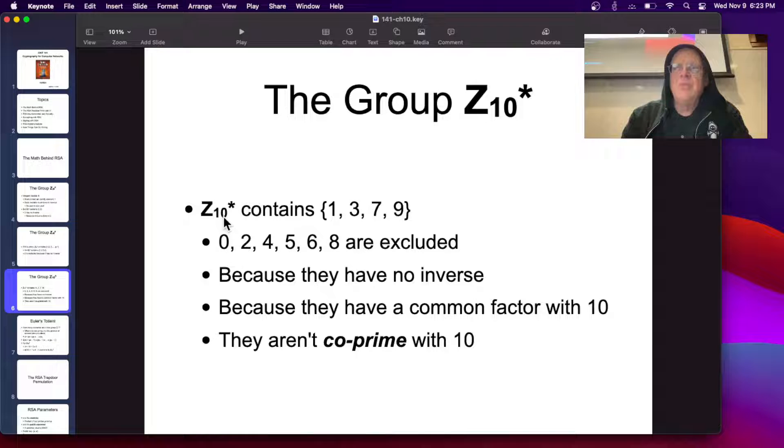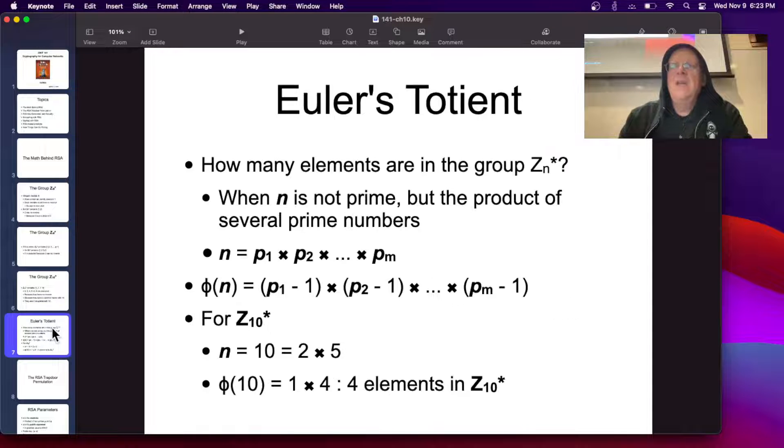This will only hit even numbers and go around and around. 5 will only hit 5 and 10, 5 and 10, 5 and 10, and so on. So these ones are not part of the group. So Euler's totient is the number that measures how many numbers you can actually use in this group. Z star N, it's actually extremely simple. If N is the product of prime numbers, then Euler's totient is the prime number minus 1 times all the prime numbers minus 1 multiplied together.